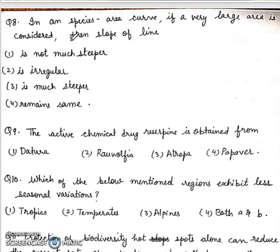Question 8: In a species area curve, if a very large area is considered, then slope of line: is not much steeper, is irregular, is much steeper, remains the same. Right answer will be third. Slope of line is much steeper.